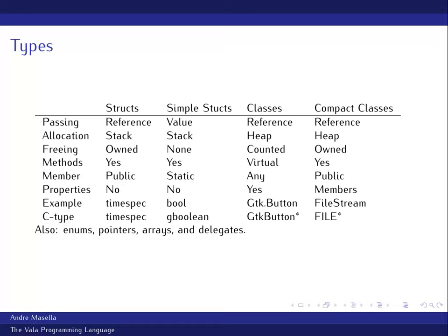An example of a simple struct is what Vala calls bool, which is underneath G_BOOLEAN — basically an int assumed to be zero or one. On the class side, classes are passed by reference; you always get a pointer. You cannot get anything but a pointer to a class. Allocation is in the heap. Classes all have a reference counter: every time something takes ownership, it increments; when done, it decrements. Once the reference count goes to zero, the object is freed.